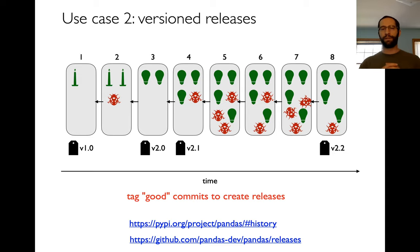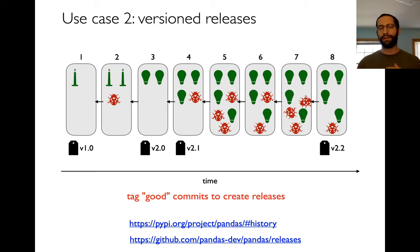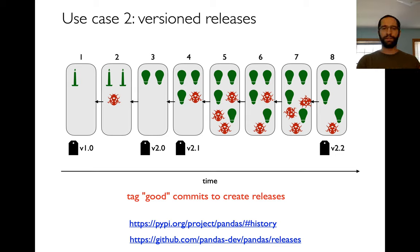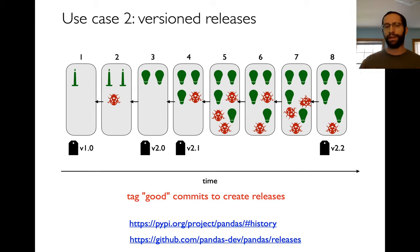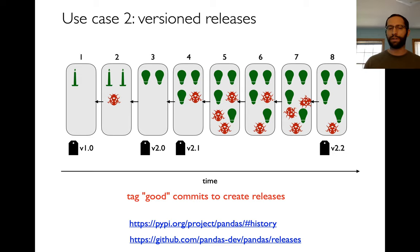Typically, on a software project under active development, you have people making changes and all this history. The development team understands the code and bugs, and they might always be on the latest version. But outsiders who want to use it need to choose which version to use. These developers or outsiders will say: maybe this is a good commit — that's version one. Commit three is version two, commit four is version 2.1, and commit eight is version 2.2. We'd tell outsiders: unless you're actually programming this project, choose one of these four. It doesn't make sense to ever use version seven. In version control systems, there's often the ability to tag specific commits, and that's how you release a version of your software.